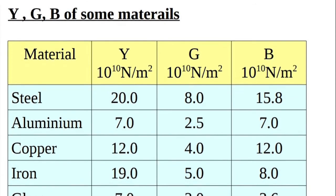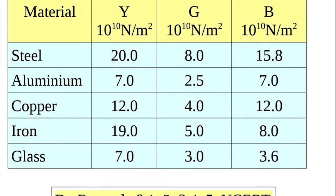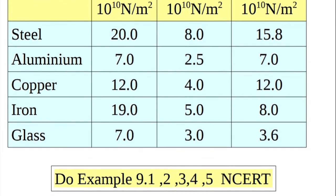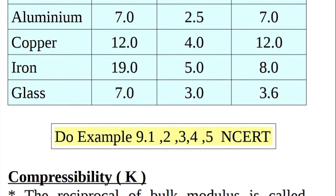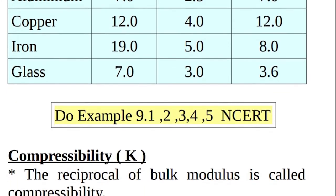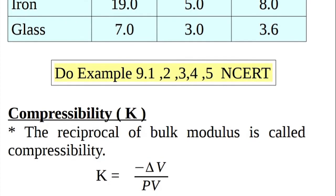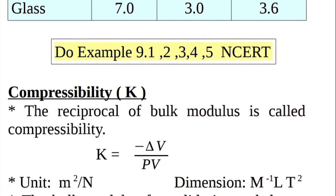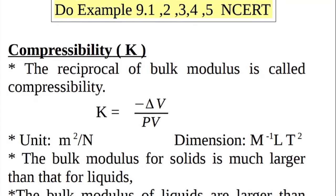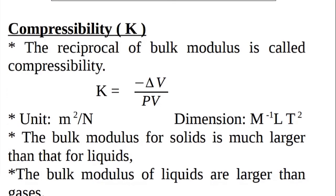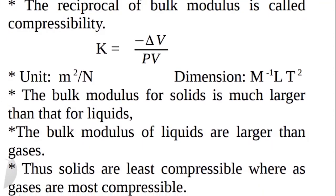Young's modulus, rigidity modulus, and bulk modulus of some materials — steel, aluminium, copper, iron, and glass — are given in the table. The reciprocal of bulk modulus is called compressibility: K = 1/B = −ΔV / (PV). Its unit is meter square per Newton and its dimension is M⁻¹ L T². The bulk modulus for solids is much larger than for liquids, and liquids have larger bulk modulus than gases. Thus, solids are the least compressible, whereas gases are the most compressible.